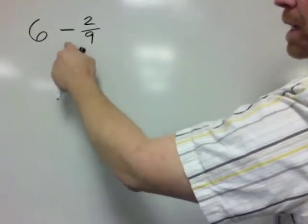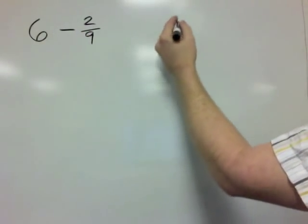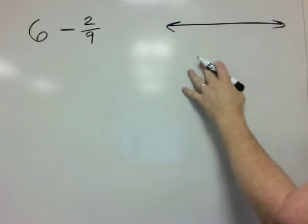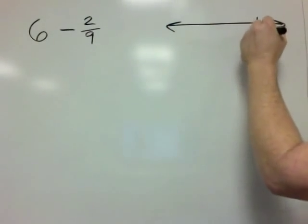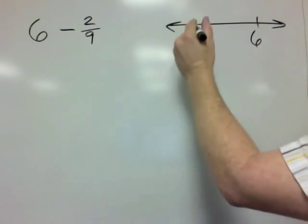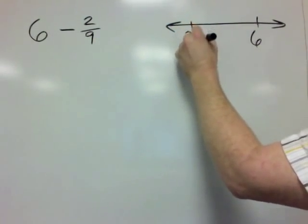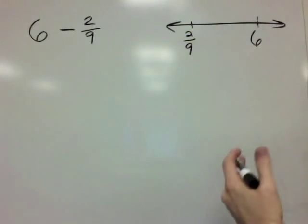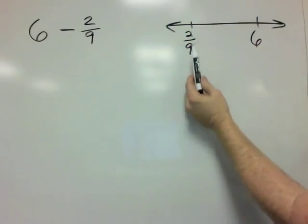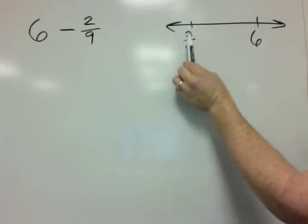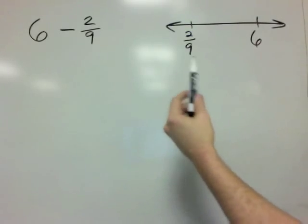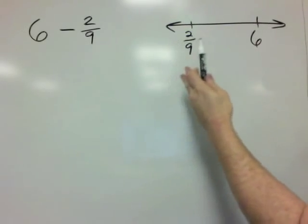So 6 minus 2 ninths — I want you to think of it as a number line. Here's our number line. Somewhere on this number line there lives a 6. Somewhere on the left is the fraction 2 ninths. The idea is we want to figure out how far it is from 2 ninths to 6. Let's take a couple of steps — let's do this in baby steps.